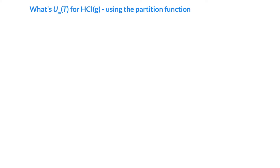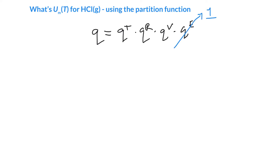We can take a more complicated molecule, such as HCl, and use the partition function to calculate the internal energy. Again, the molecular partition function is a product of translational, rotational, vibrational, and electronic. Just like before, we assume the electronic partition function is 1 — there are no low-lying electronic states for HCl, all electrons are paired, so it's a singlet ground state. For vibrations, we make the approximation that Q_vib = 1, assuming we're in the low-temperature limit where upper vibrational levels are not important.